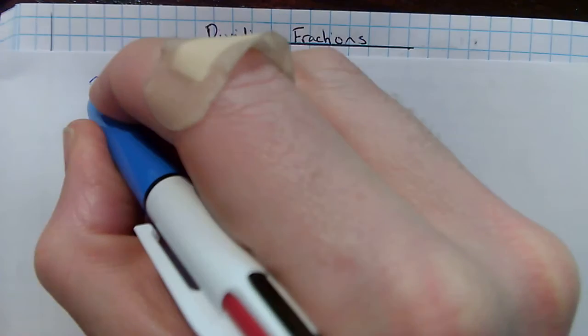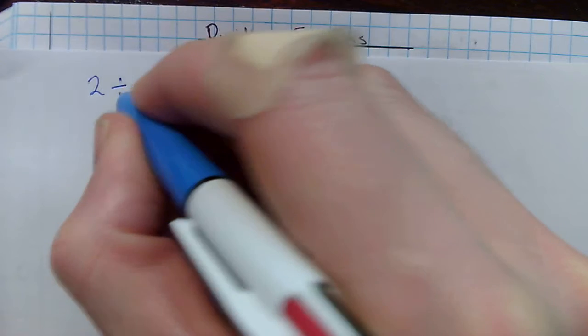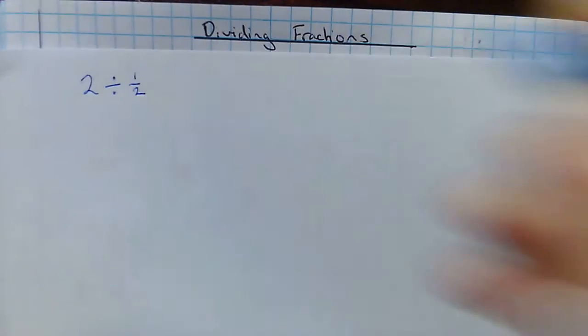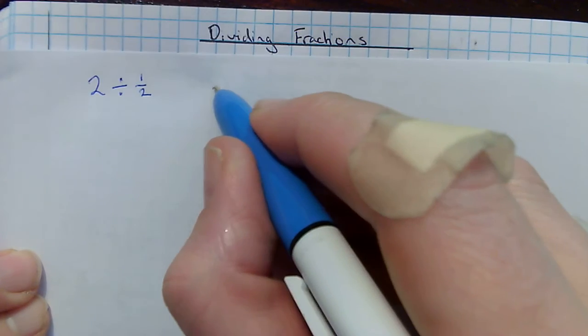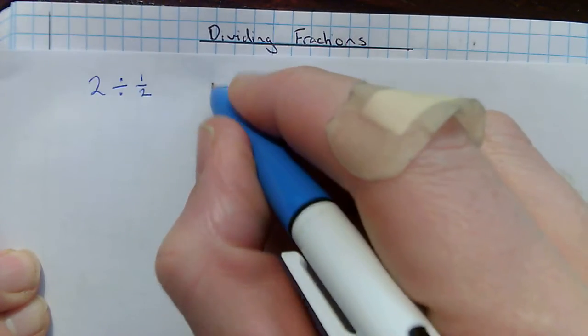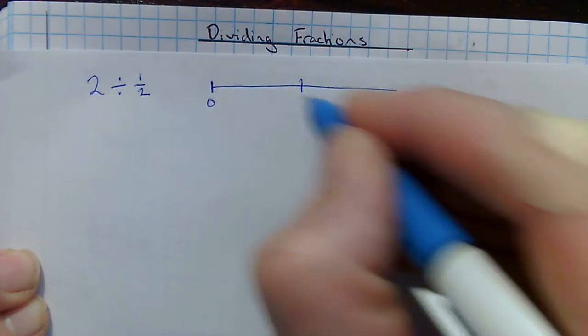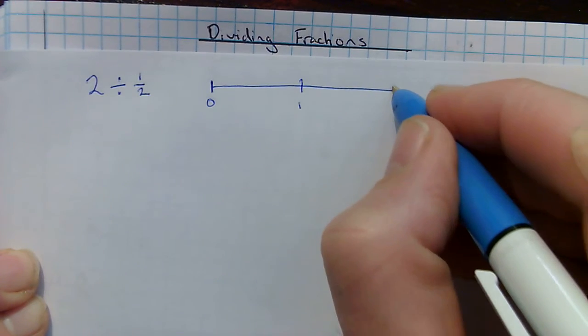Let's say, for example, I've got 2 divided by 1 half. And what that's asking me is how many halves go into 2. So let's think about a number line that goes from 0 up to 2. There's 0, there's 1, there's 2.